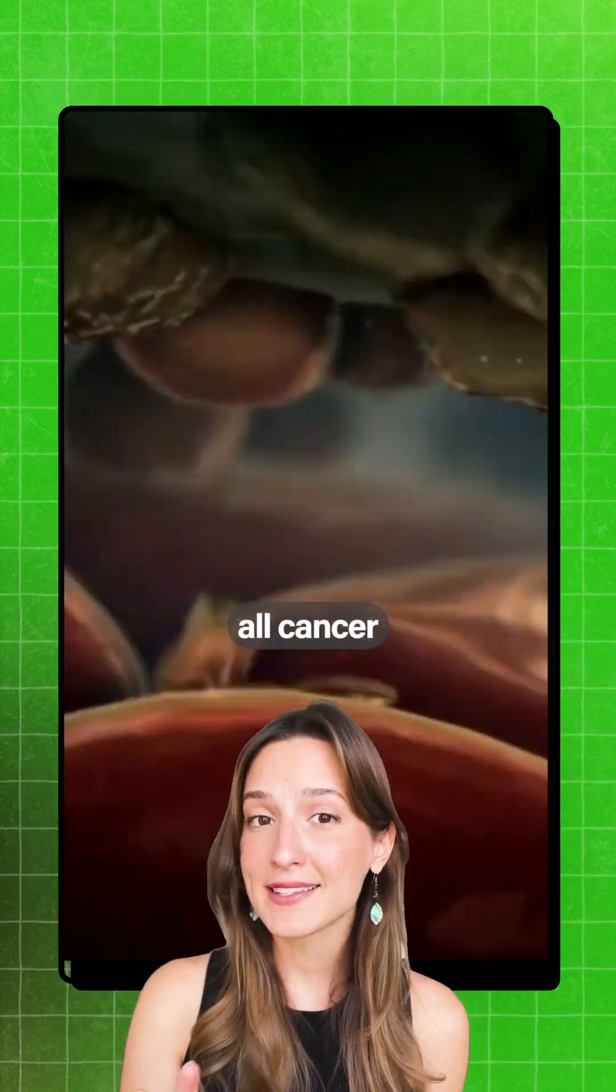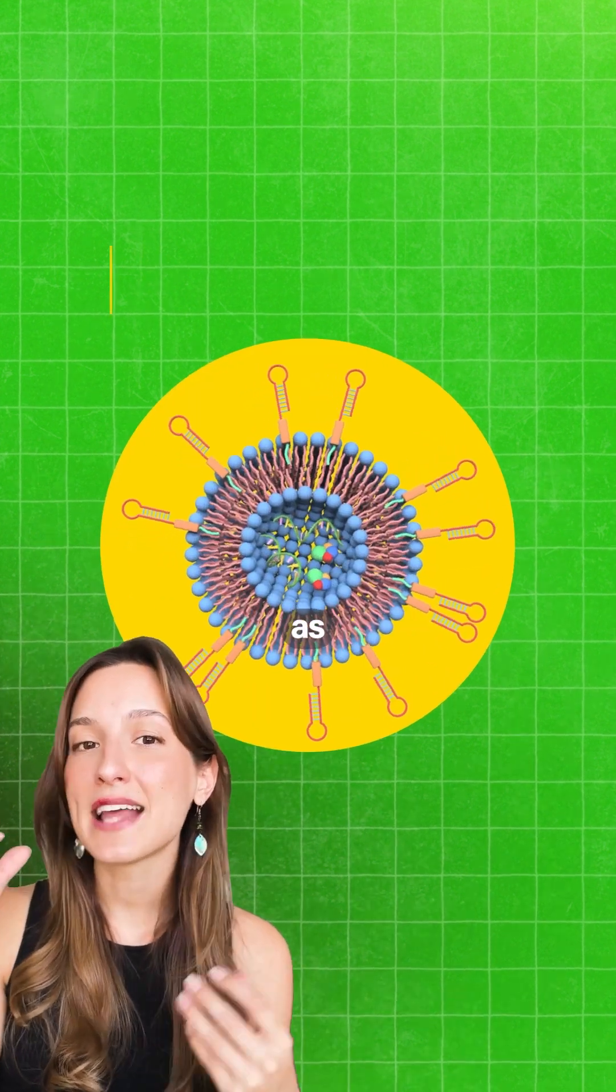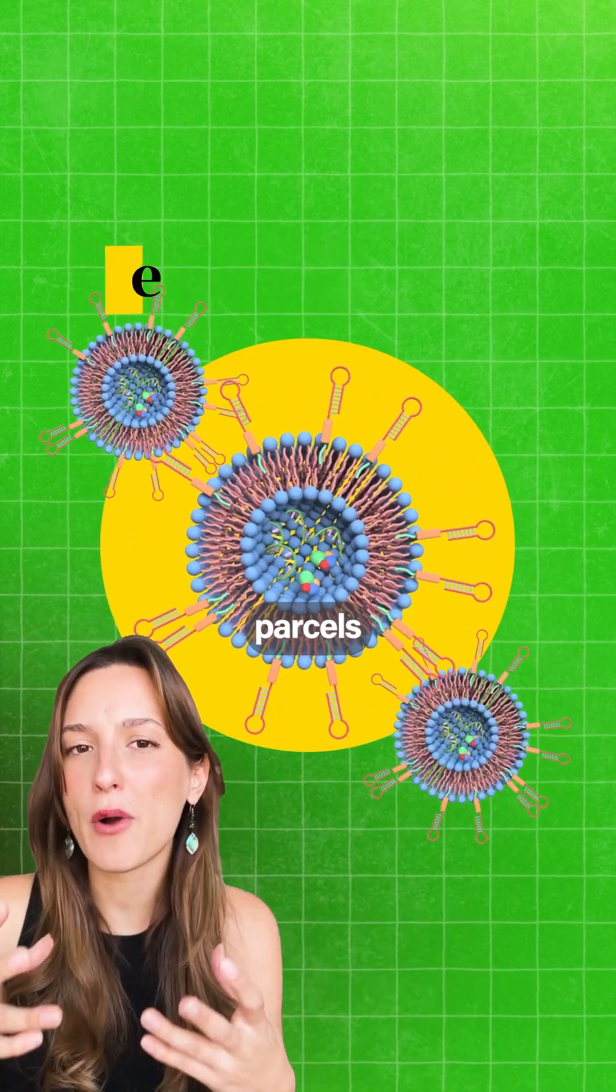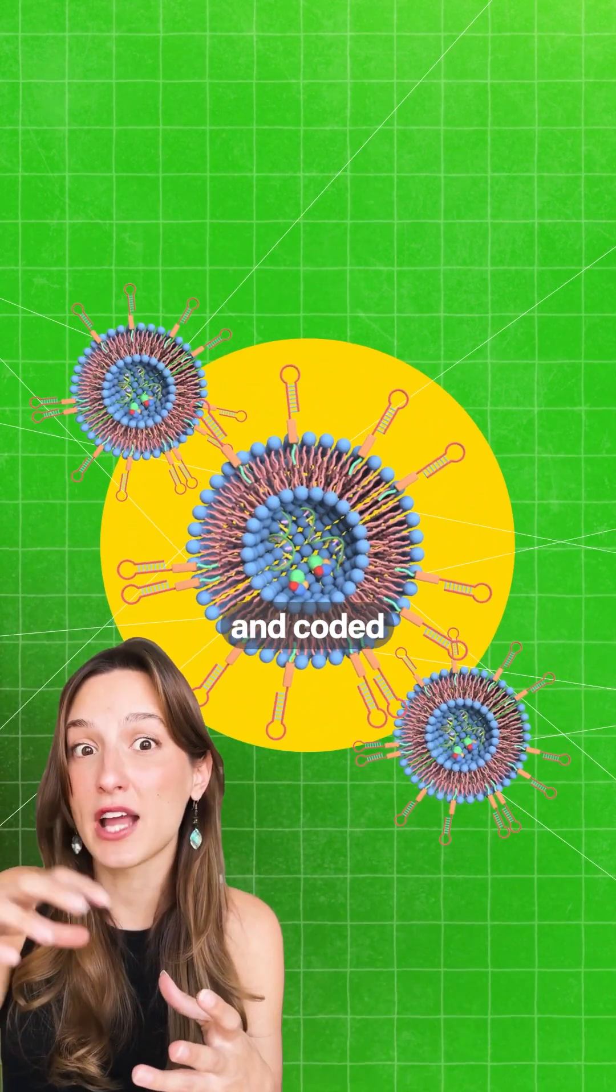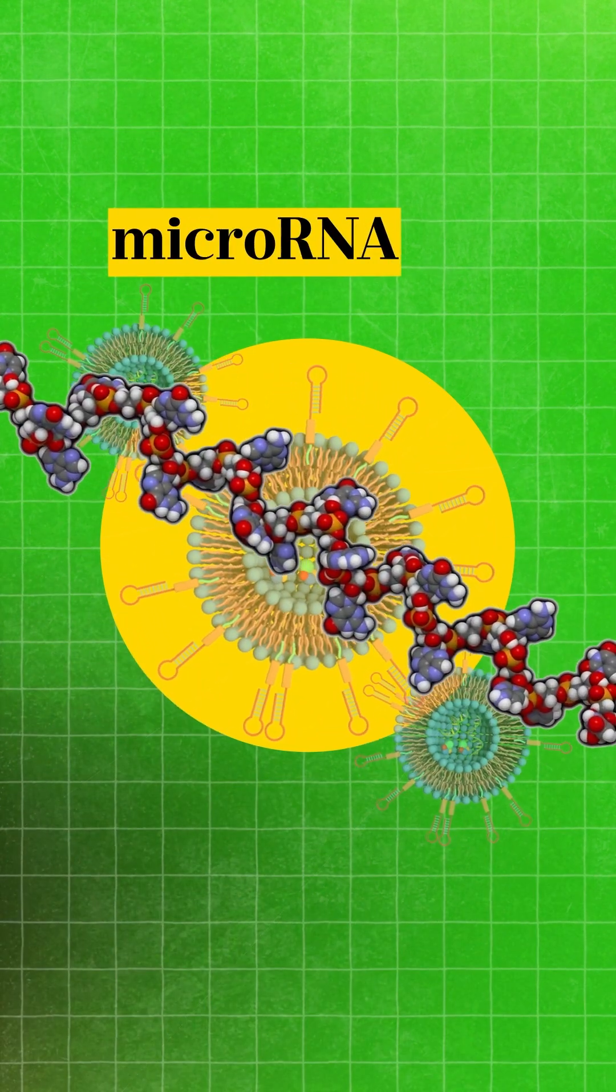But most of all, cancer cells are extremely chatty. They release something known as exosomes. Think of them as little parcels that hide signals and coded messages inside of them. These exosomes can hide microRNA.